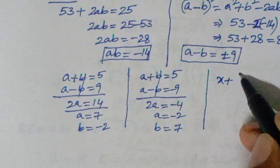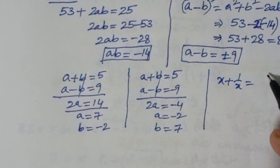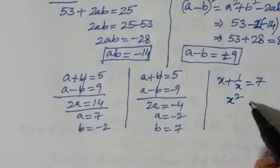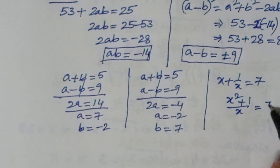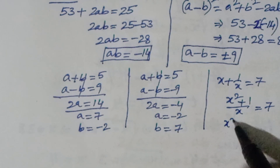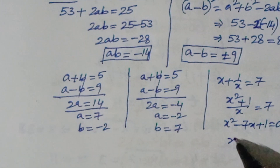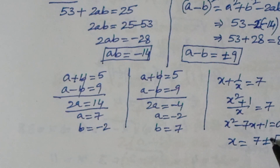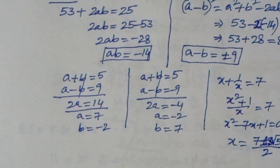Since x + 1/x = a = 7, multiplying through: x² - 7x + 1 = 0. Solving gives x = (7 ± √(49-4))/2 = (7 ± 3√5)/2.